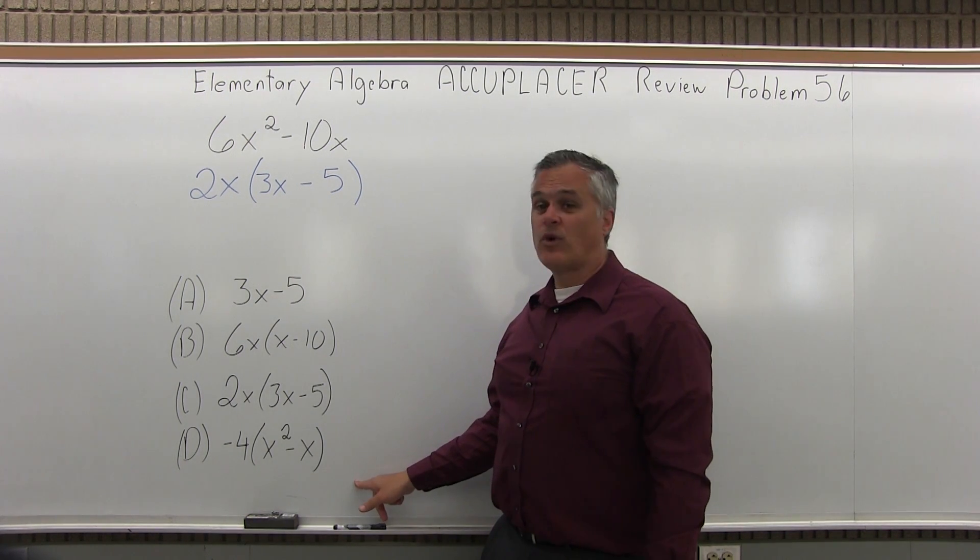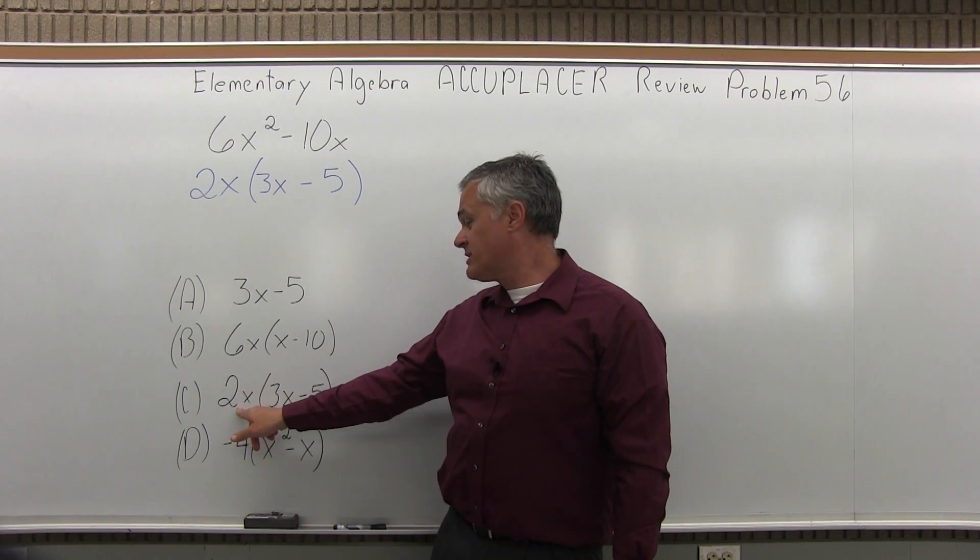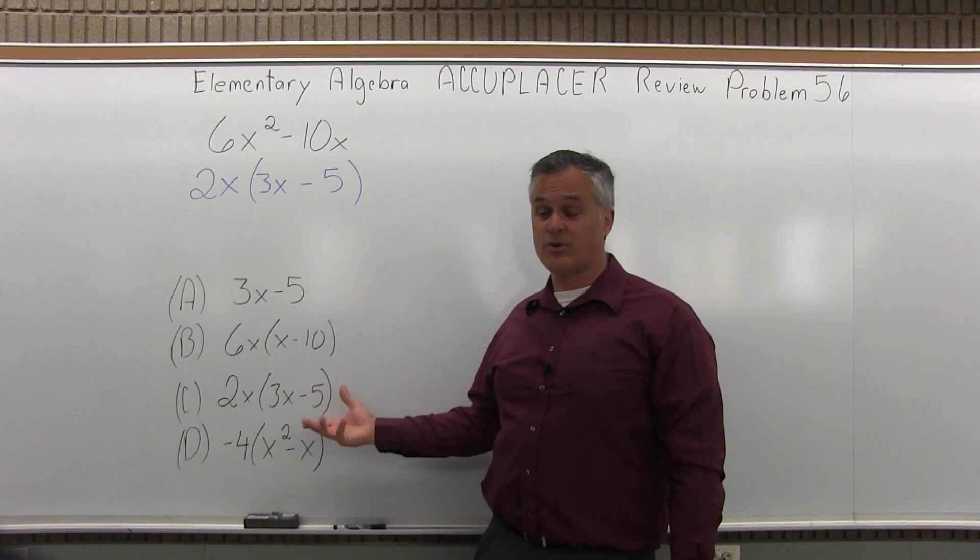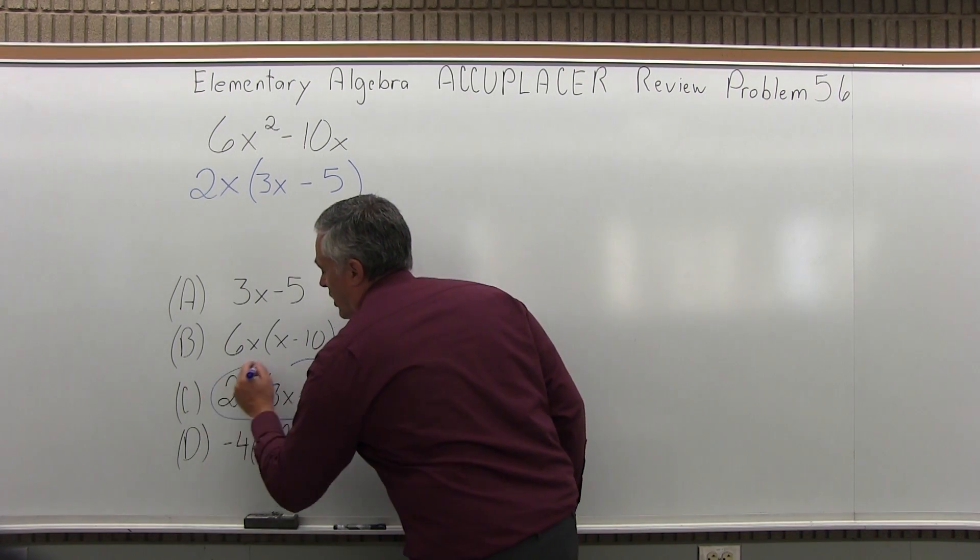As I look at my list of four options, option C is a perfect match with 2x in front of the parentheses, 3x minus 5 inside the parentheses. So the answer for this problem is option C.